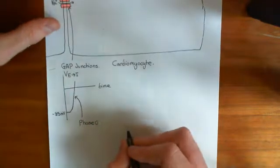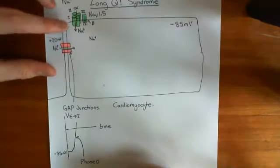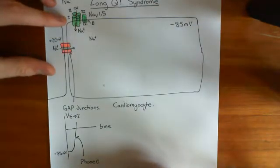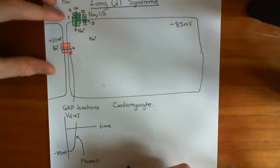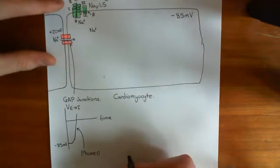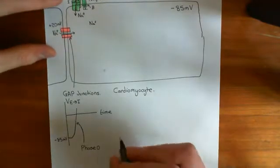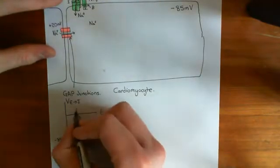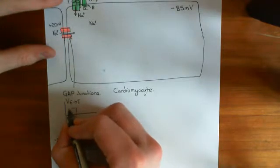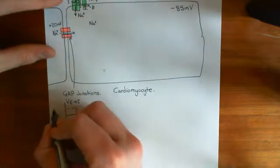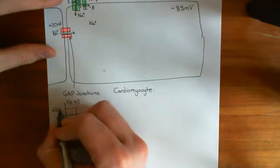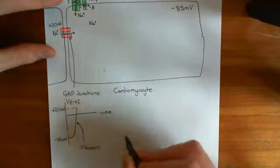These voltage-gated sodium channels remain open for a certain amount of time and then they close. At the point at which they close, the membrane has generally depolarized up to around plus 20 millivolts.